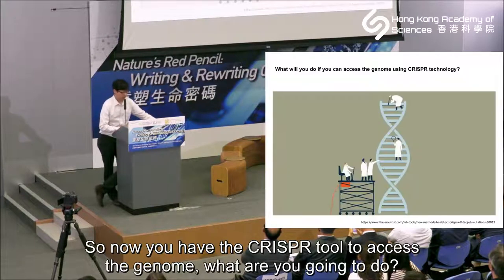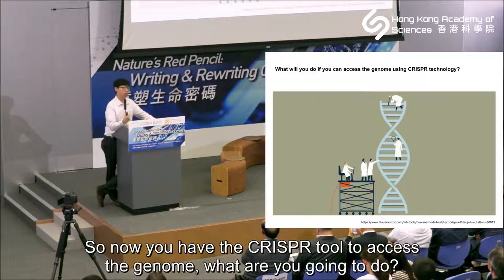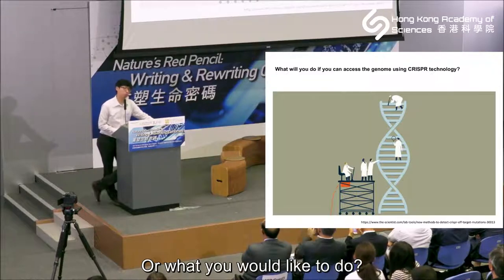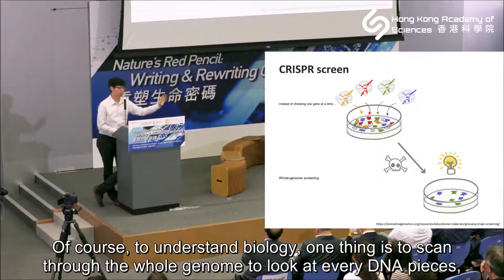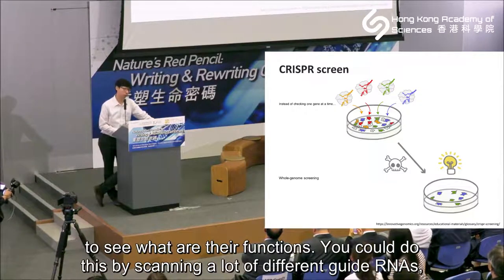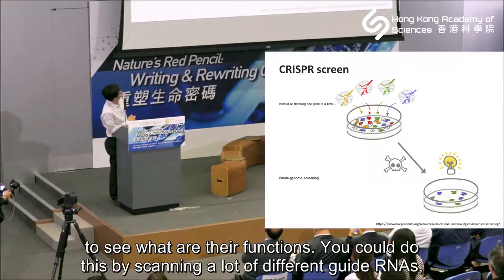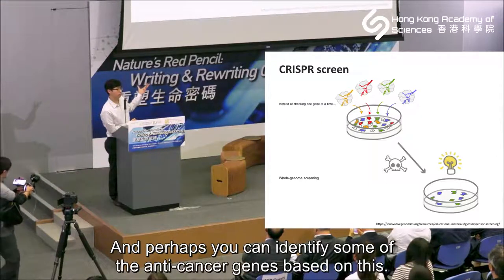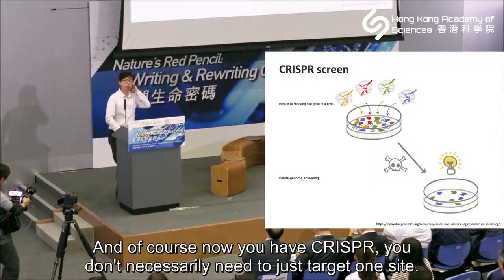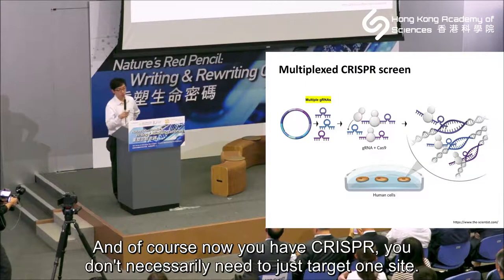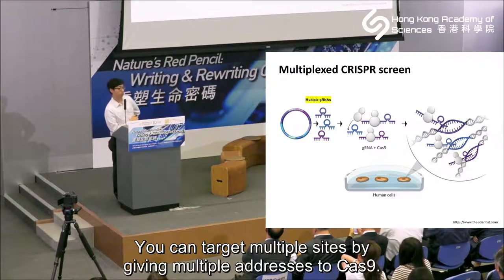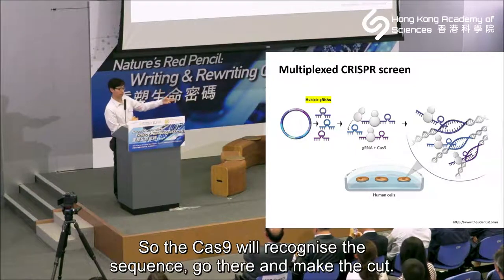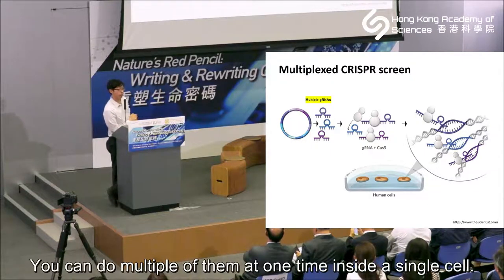Now that you have the CRISPR tool to access the genome, one thing you can do to understand biology is to scan through the whole genome, look at every DNA piece, and see what their functions are. You could do this by scanning a lot of different guide RNAs and seeing which ones are good or bad — perhaps identifying some anti-cancer genes. With CRISPR, you don't necessarily need to target just one site. You can target multiple sites by giving multiple addresses to Cas9, which will recognize the sequences, go there, and make cuts at multiple sites inside a single cell simultaneously.